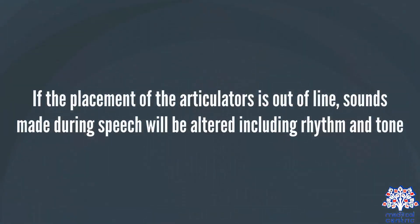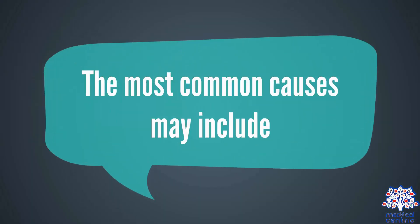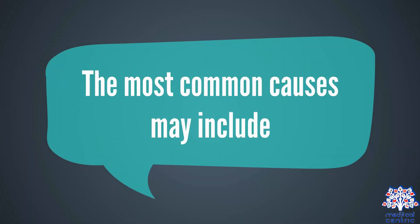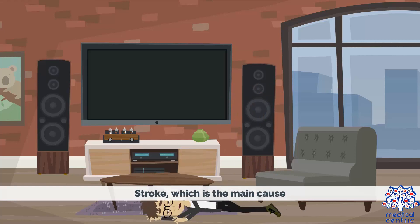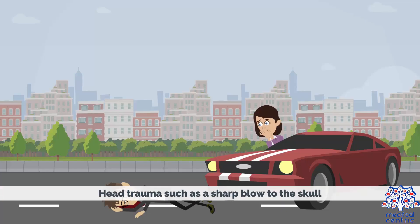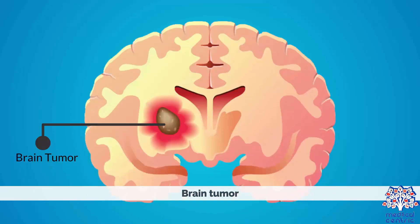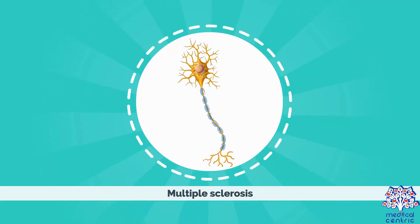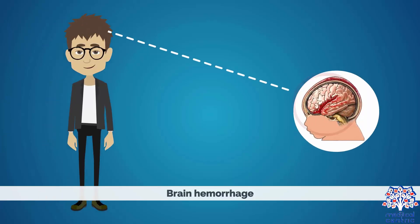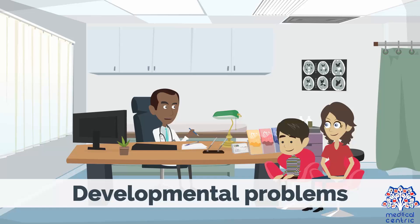If the placement of the articulators is out of line, sounds made during speech will be altered, including rhythm and tone. The most common causes may include stroke, which is the main cause, head trauma such as a sharp blow to the skull, brain tumor, multiple sclerosis, brain hemorrhage, and developmental problems.